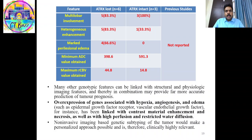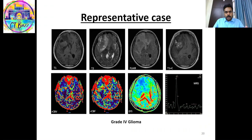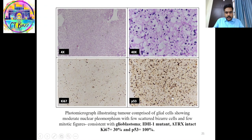Over-expression of genes associated with hypoxia, angiogenesis, and edema has been linked with contrast material enhancement and necrosis, as well as with high perfusion and restricted water diffusion. A representative case is shown with conventional sequences, advanced rCBV, rCBF, DTI, and MRS.